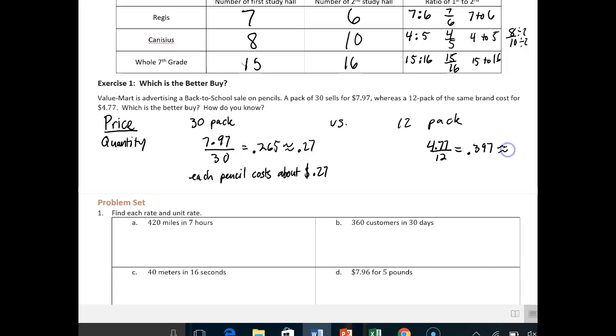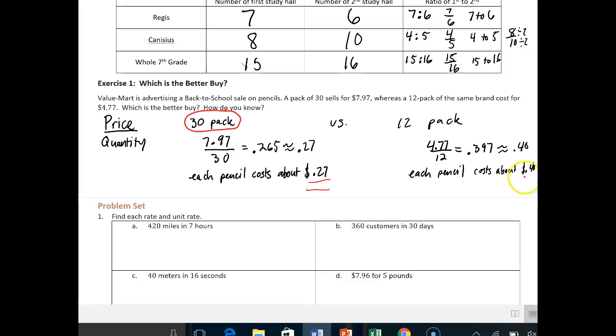And what does this mean? This is about, the squiggly equals means about, about 40 cents. So again, what does that mean? Each pencil costs about 40 cents. So what's the better buy? The better buy is obviously the 30-pack, right? Because you want to pay less per pencil. Here you're paying 27 cents versus here you're paying 40 cents. So obviously we want to pay less per pencil.